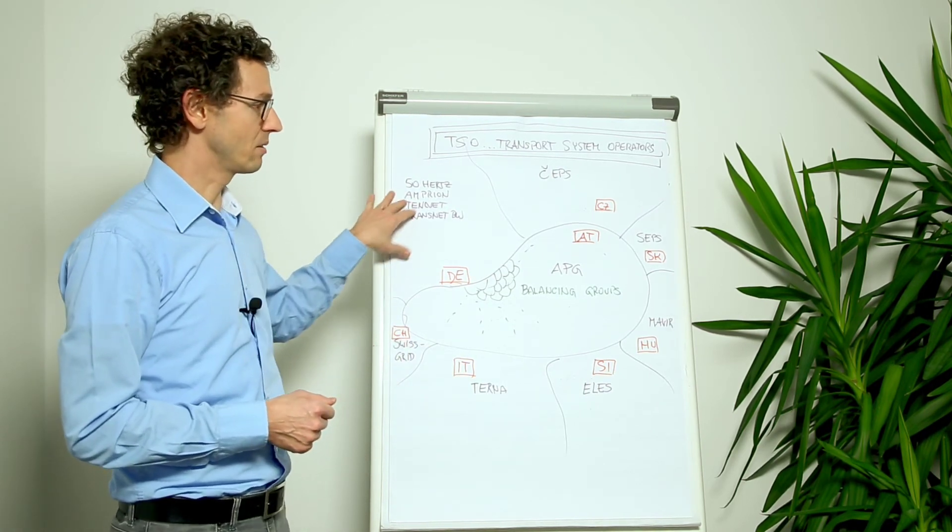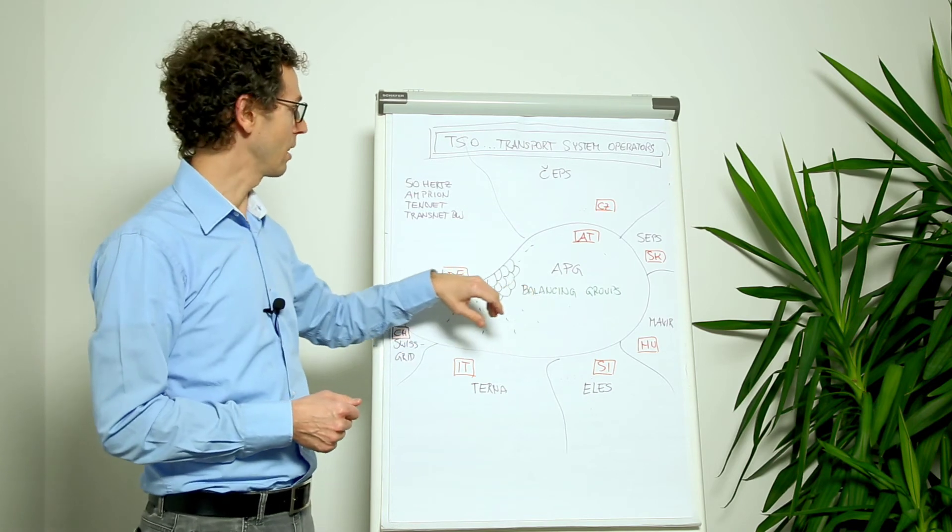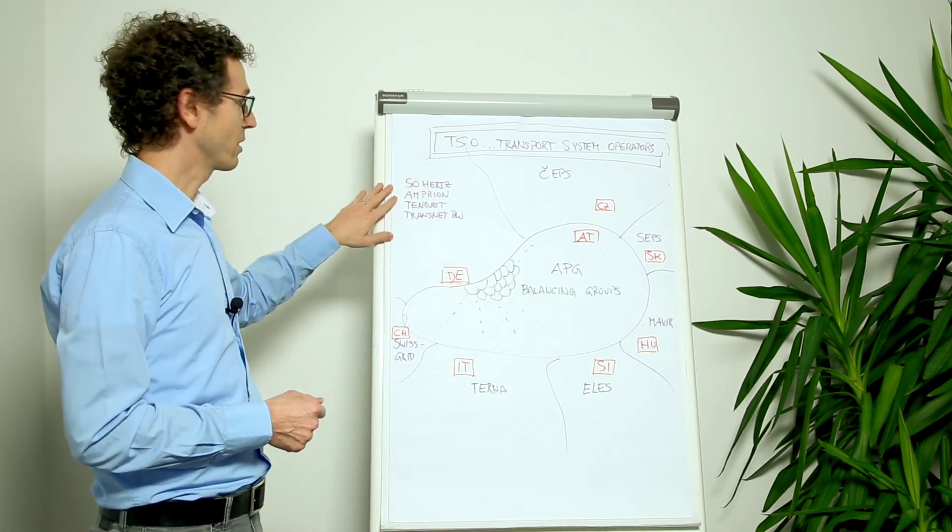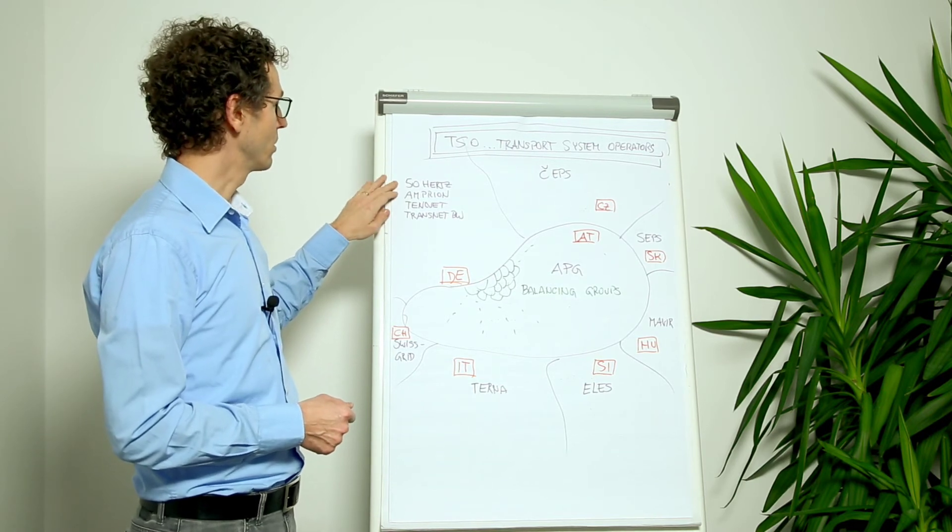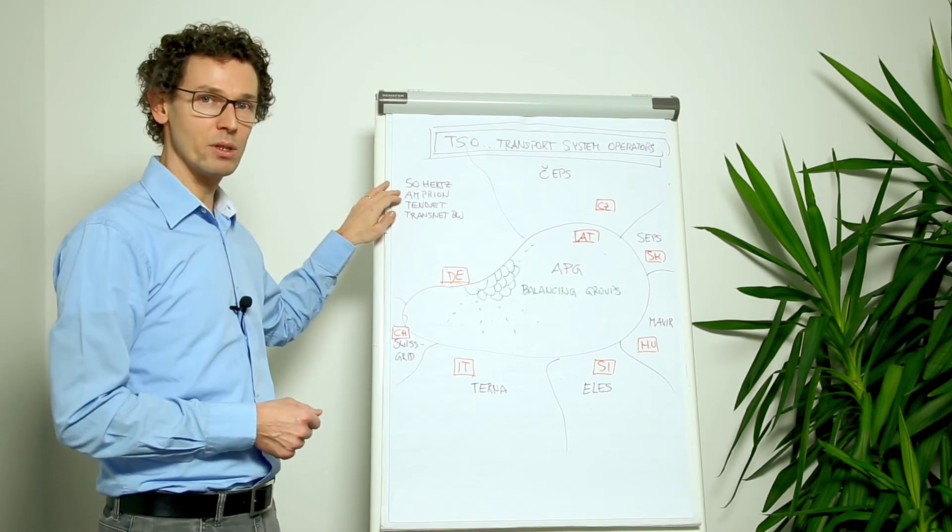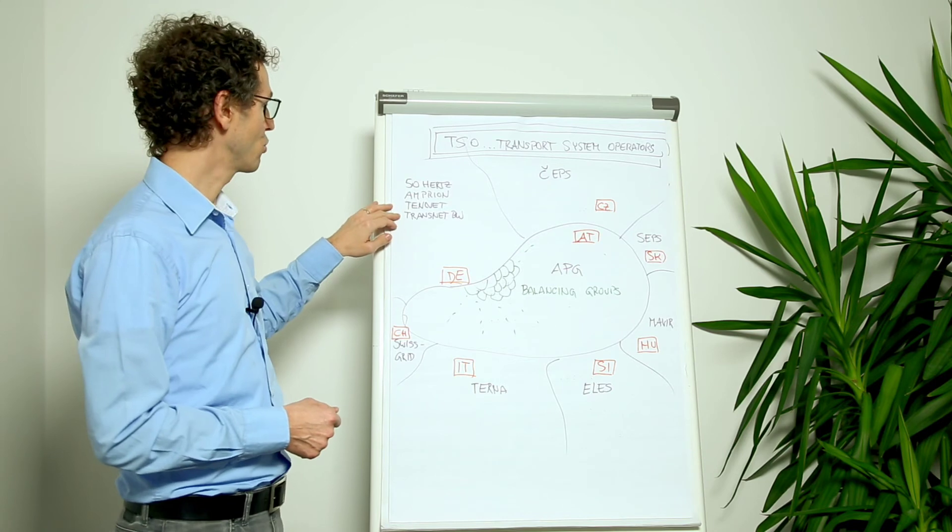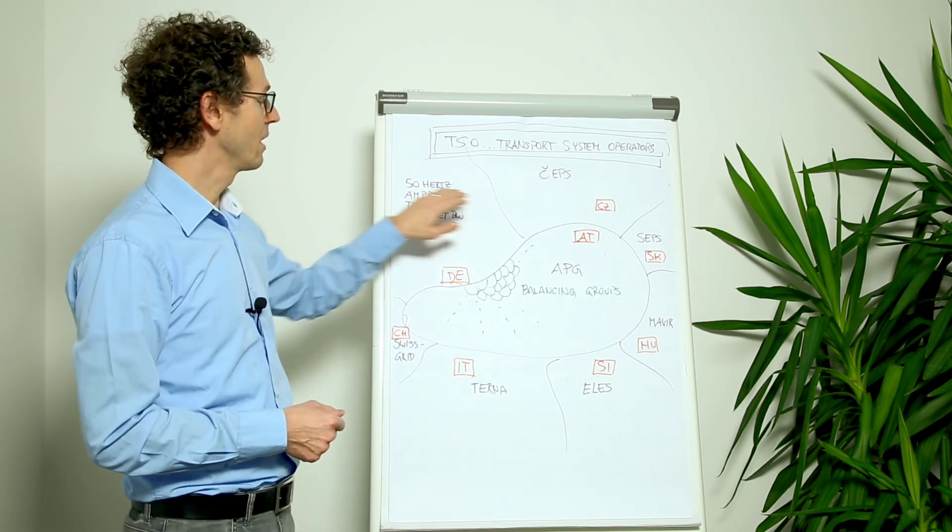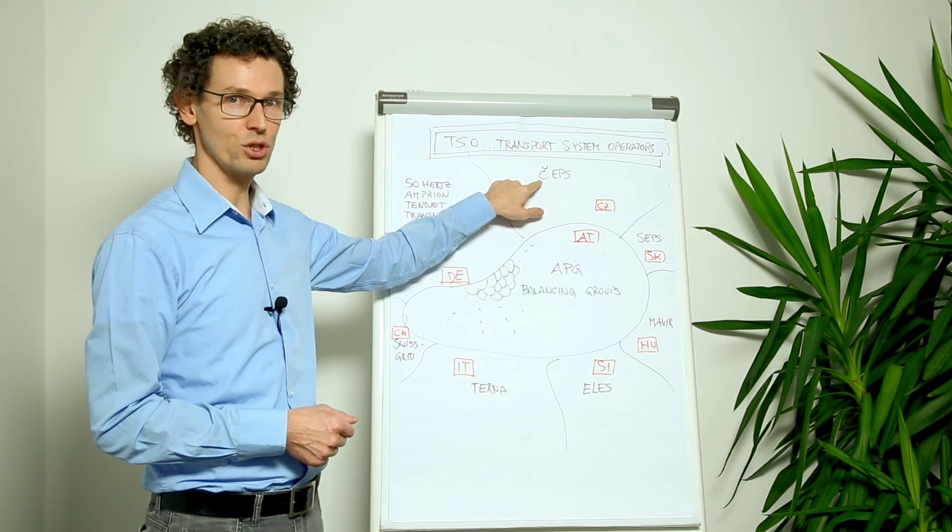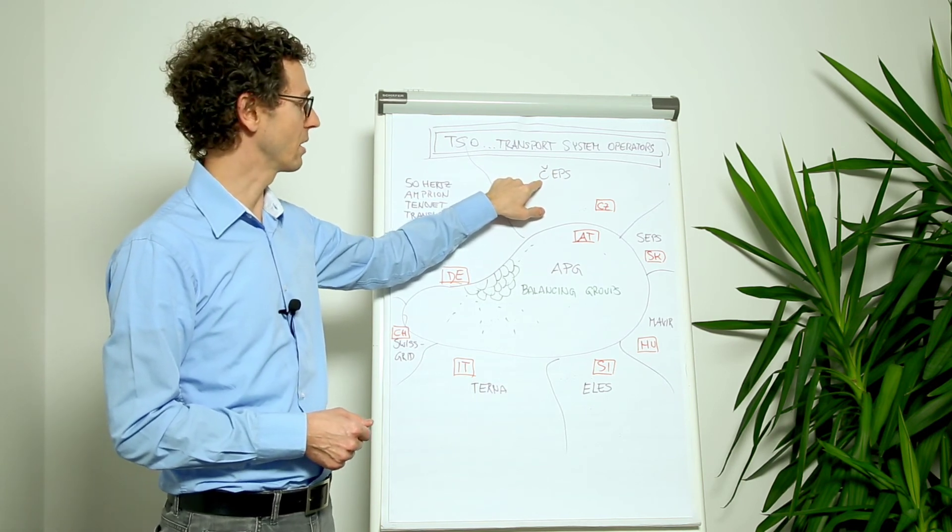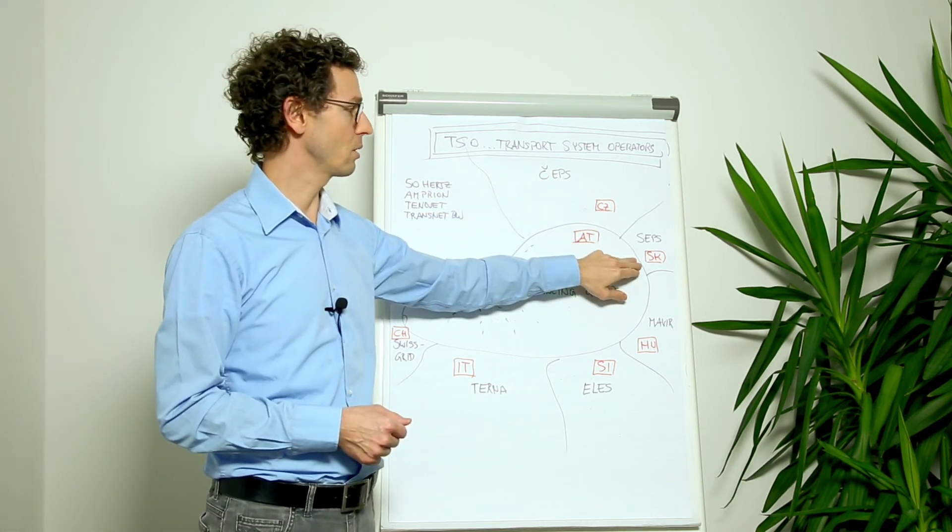This is the case in Germany, this is the case in all the neighboring countries here as well. So here in Germany, for example, there are four transport system operators: 50 Hertz, Amprion, Tenet, and Transnet BW. In the Czech Republic there is CEPS, which is the transport system operator, and CEPS here for Slovakia.